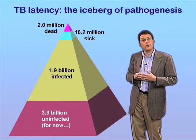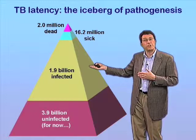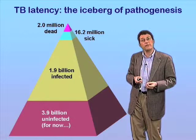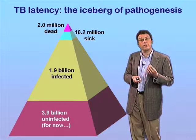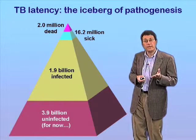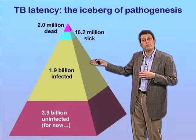Clearly, there's an enormous need to tackle this problem of latent tuberculosis and reactivation, but the stark reality is that we currently have no tools whatsoever that are both effective and practicable to intervene against latent TB. The only tool we currently have is nine months of chemoprophylaxis with a drug called isoniazid, and it's clearly impractical to treat 2 billion people on a global basis with nine months of drug therapy. It's not going to happen.